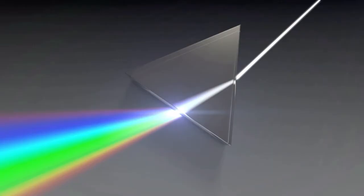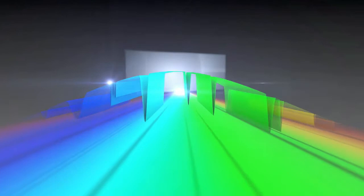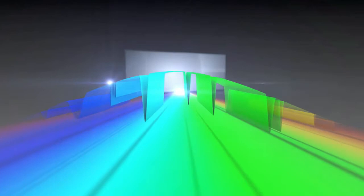Any object that absorbs or emits light can be studied with a spectrograph to determine characteristics such as its temperature, density, chemical composition and velocity.